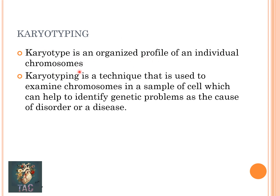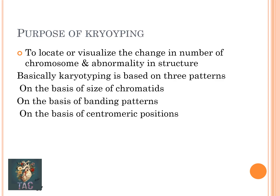Karyotyping is an organized profile of an individual's chromosomes. It is a technique used to examine chromosomes in a sample of cells, which can help identify genetic problems as the cause of a disorder or disease. The purpose of a karyotype is to locate or visualize changes in chromosome number or abnormalities in structure. Karyotypes are classified on three patterns: size of the chromatid, banding pattern, and centromeric position.